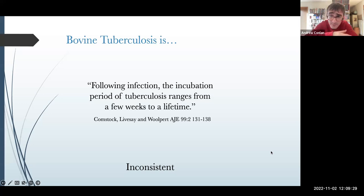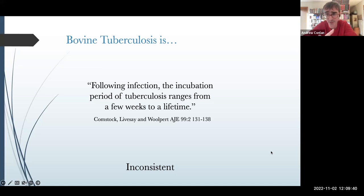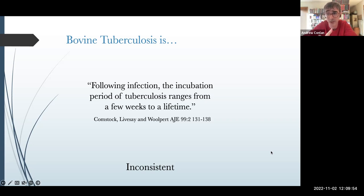In human TB, we dichotomize the disease into active tuberculosis — where you are sick, coughing, and assumed infectious — and latent tuberculosis, which covers the rest of us, in that most of us have been exposed but may never experience symptoms or be infectious. In cattle, we have less information on exactly what the spectrum of disease is, but there is no reason to think it doesn't range in the same way.